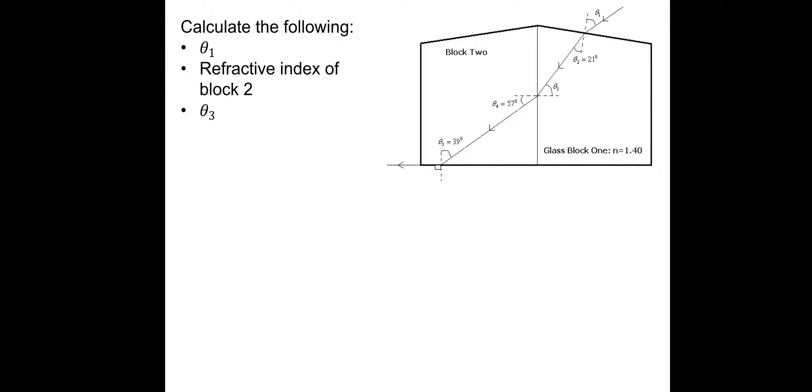Let's move on. So this one, a bit more challenging. Let's calculate the following. There's three questions here. I need to find theta 1, which is the incident angle at the top right of glass block 1. Then find the refractive index of block 2. And then find theta 3, which is the angle in the middle. So let's pause and have a go, and then I'll take you through the answers.